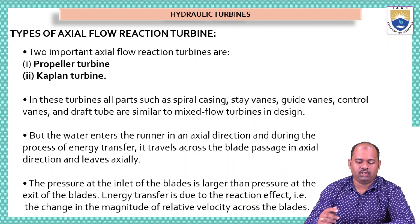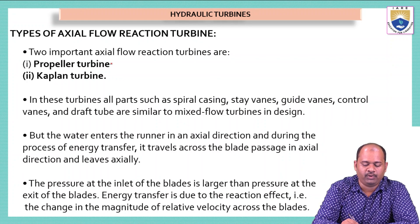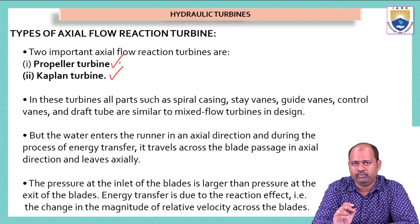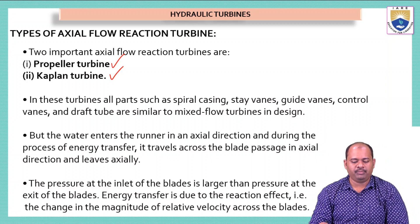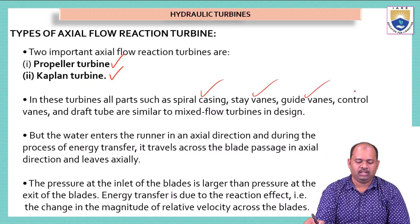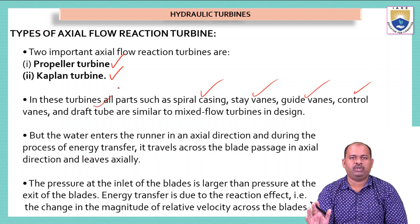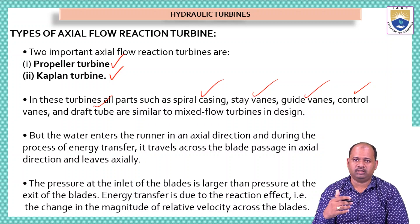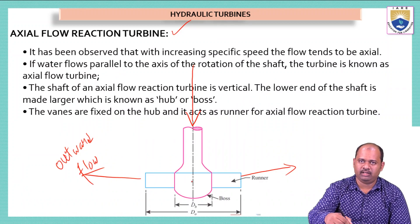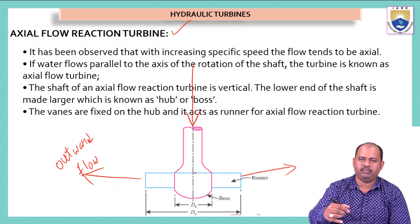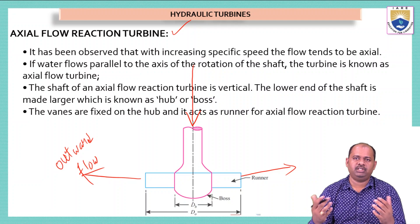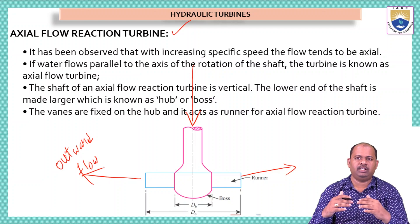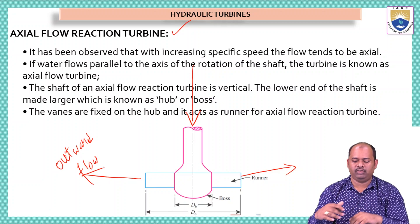There are two types of axial flow turbines: propeller turbine and Kaplan turbine. We will discuss the propeller turbine in this lecture and the Kaplan turbine in the next. In these turbines all parts — spiral casing, stay vanes, guide vanes, control vanes, draft tube — are similar to reaction turbines. The only difference is the flow of water: in the axial flow turbine, water enters at the center, passes through guide vanes into the runner vanes, and exits in the radial direction — the opposite of the Francis turbine.